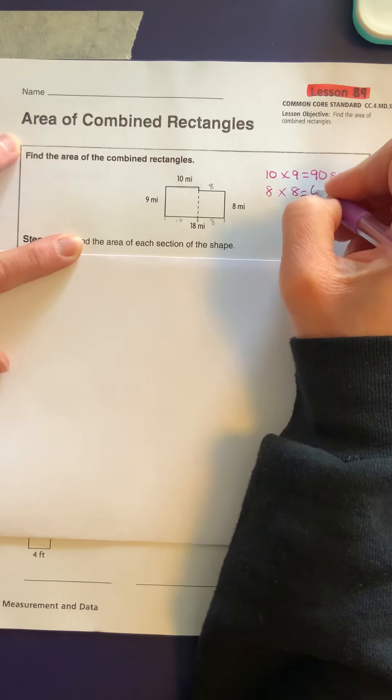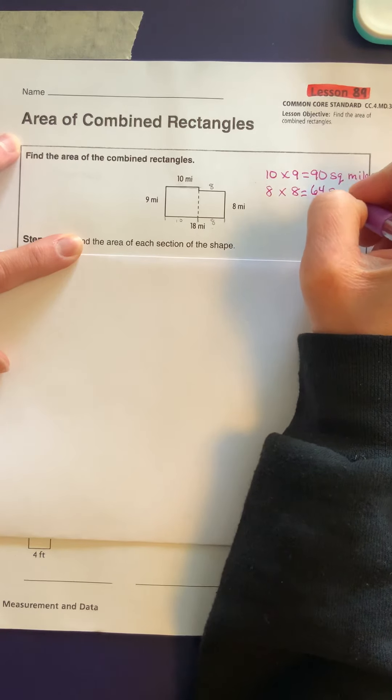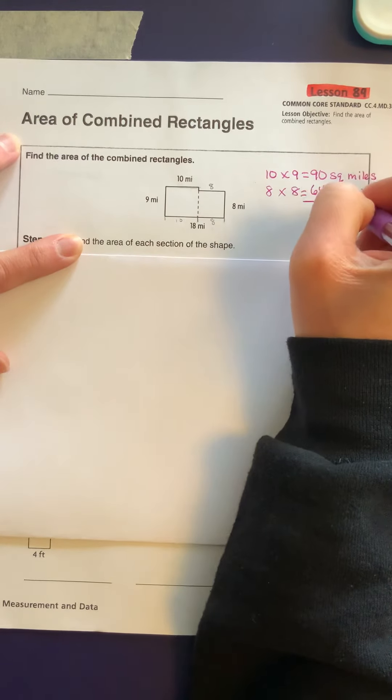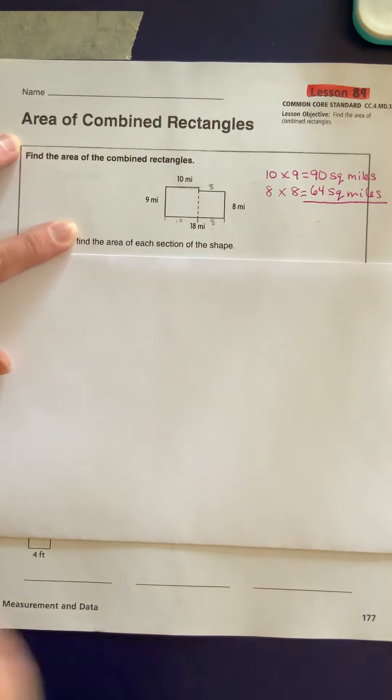The next one is 8 times 8. 8 times 8 is 64 square miles. I believe they're going to ask us to add those together. Let's just wait and see.